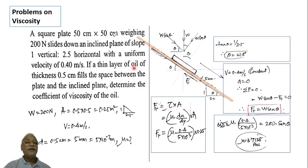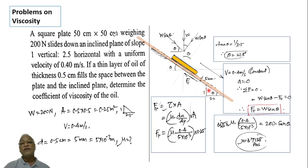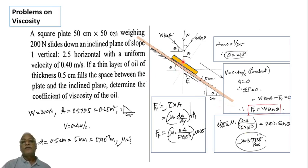A thin layer of oil of thickness 0.5 centimeter (5 mm, or 5 into 10 raised to minus 3 meters) fills the space between the plate and the inclined plane. We need to determine the coefficient of viscosity of the oil. The plate moves at a constant uniform velocity of 0.4 meter per second.